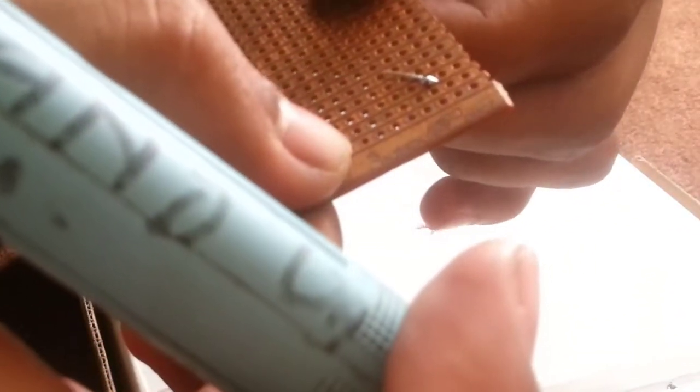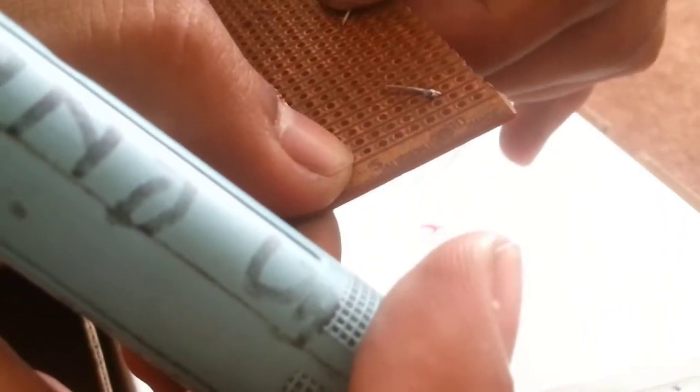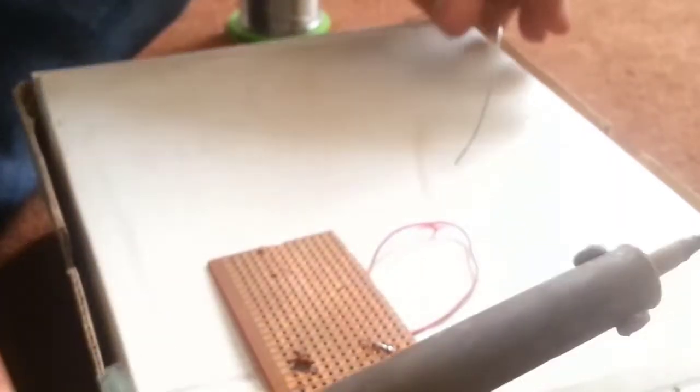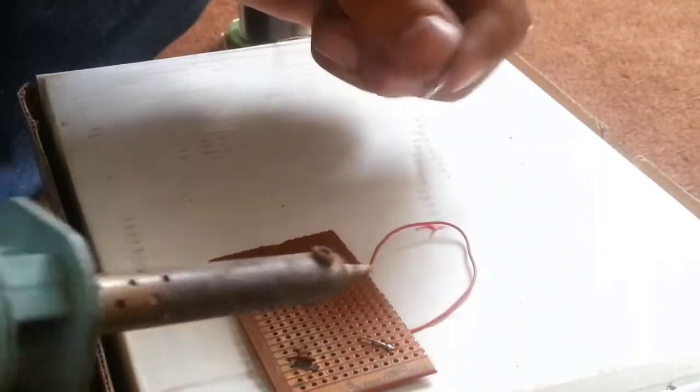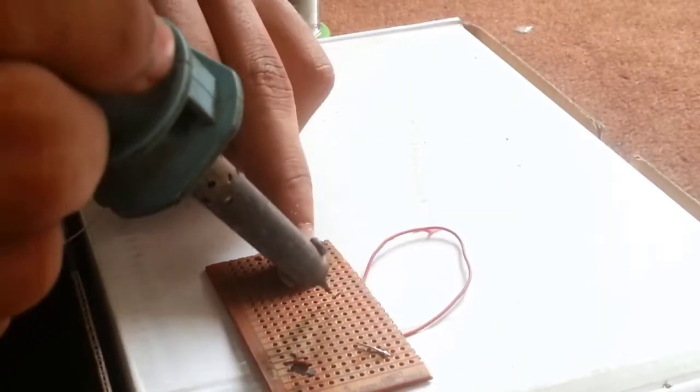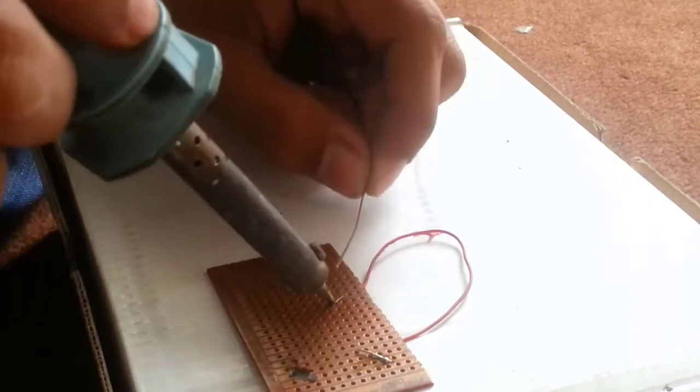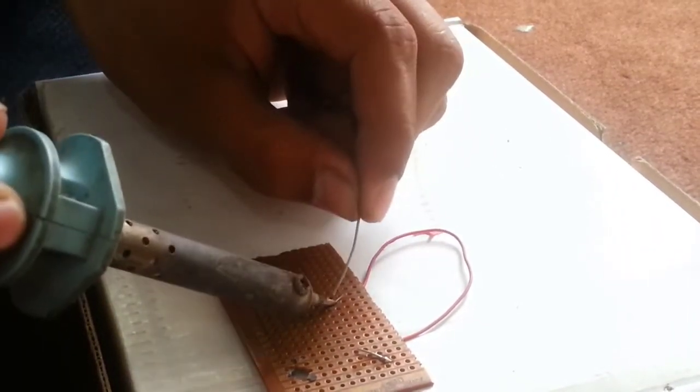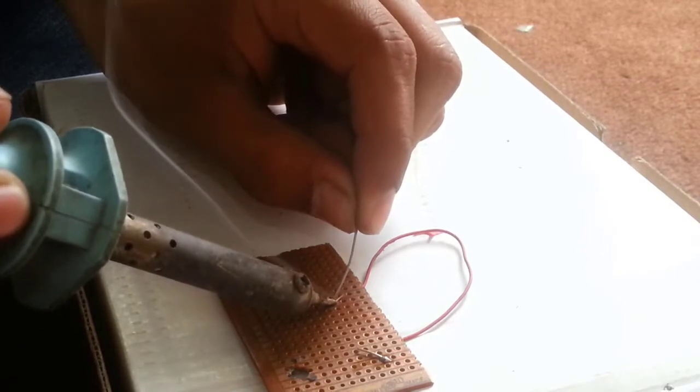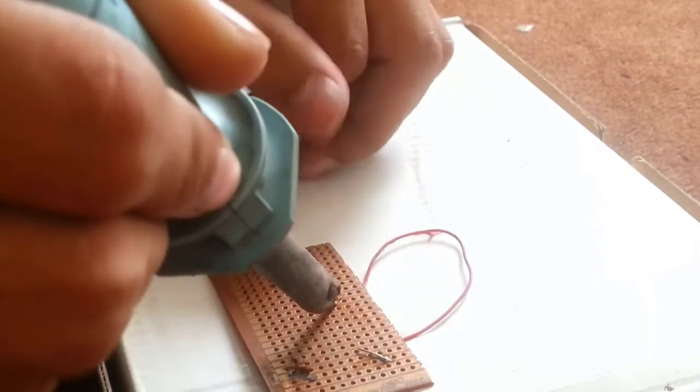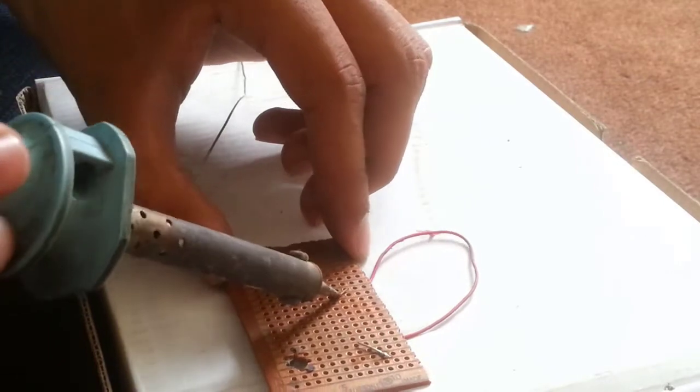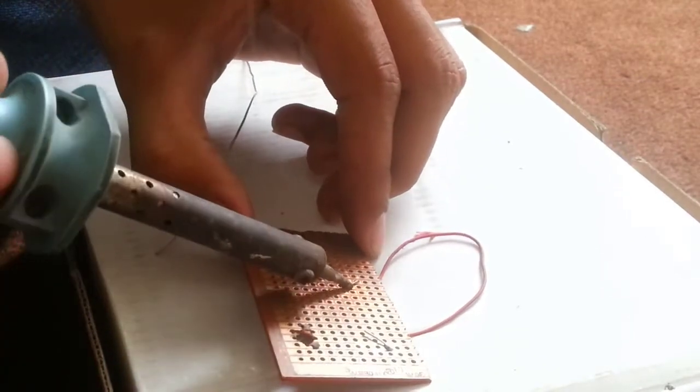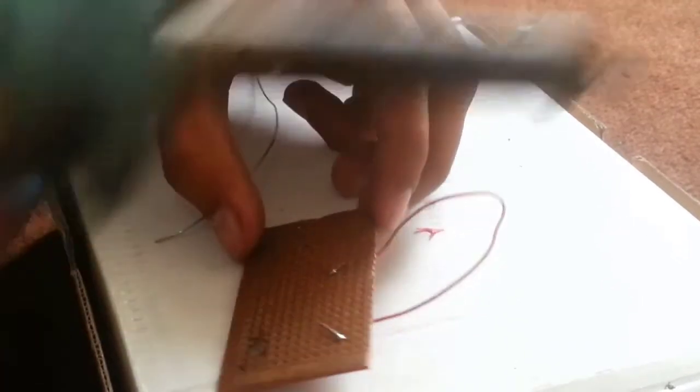Now do the same process once again. Heat up your solder, then point the solder on the wire, and then melt the soldering wire on solder and then move the solder on the wire and here you have done.